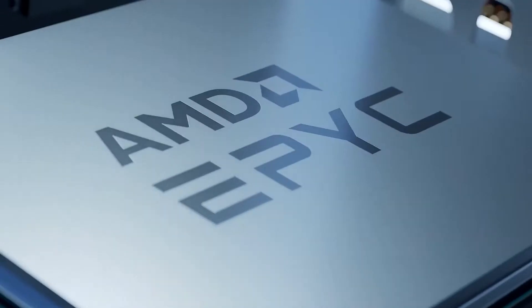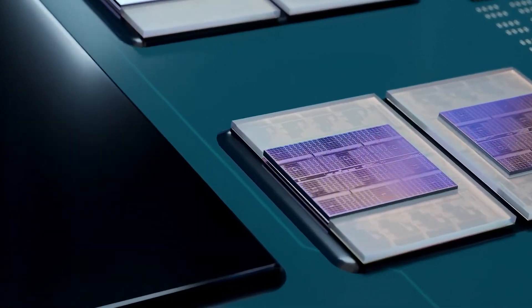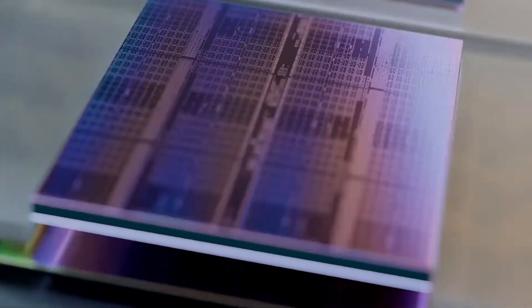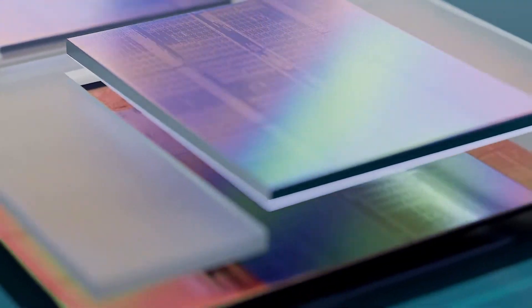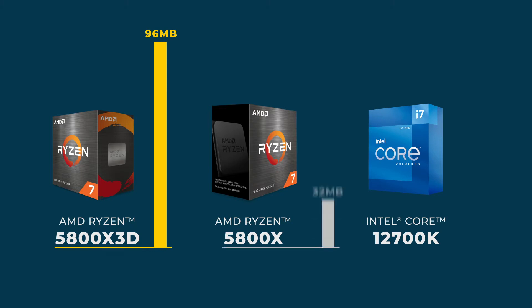Now, what is AMD 3D vCache? 3D vCache may be the biggest innovation to CPU cache in over a decade. By stacking cache vertically and reducing the width of the die size, AMD has managed to stack almost three times as much L3 cache into their new processors. For example, the Ryzen 7 5800X3D has a stunning 96MB of L3 versus the 32MB of AMD's own Ryzen 5800X and the 25MB on the Intel Core i7-12700K.